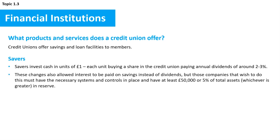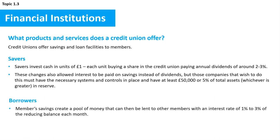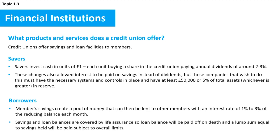These changes also allowed interest to be paid on savings instead of dividends, but those companies wishing to do so must have the necessary systems and controls in place and hold at least £50,000 or 5% of total assets — whichever is greater — in reserve. Members' savings create a pool of money that can be lent to other members at an interest rate of 1% up to a maximum of 3% of the reducing balance each month. A unique feature is that members' savings and loan balances are covered by life assurance, meaning any loan balance will be paid off on death and a lump sum equal to savings held will be paid, subject to overall limits.